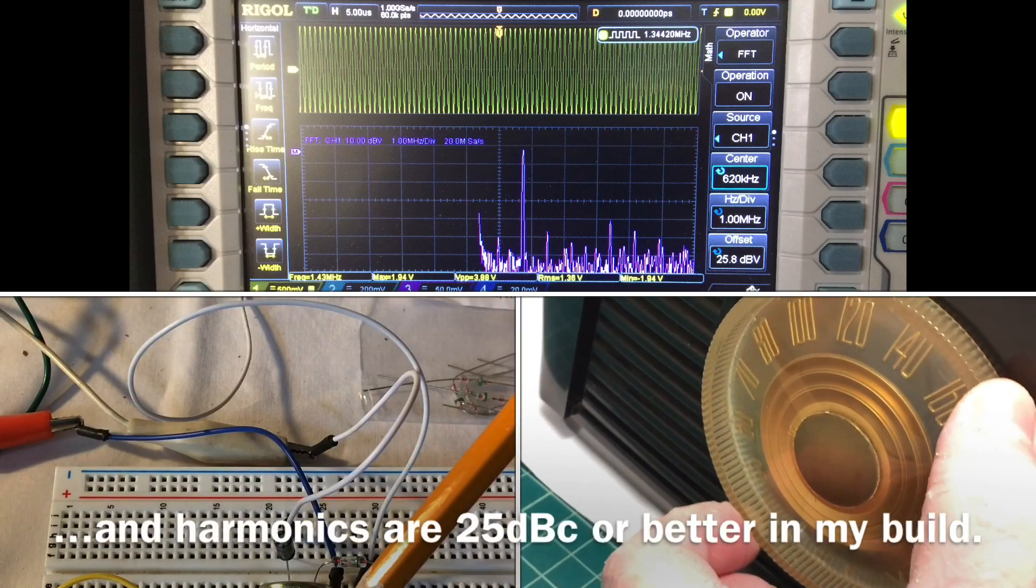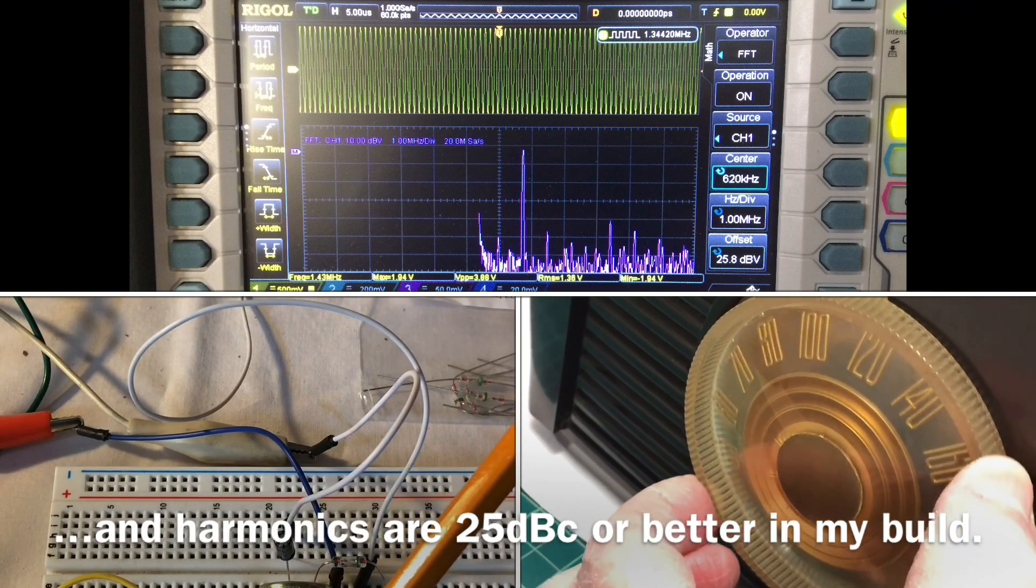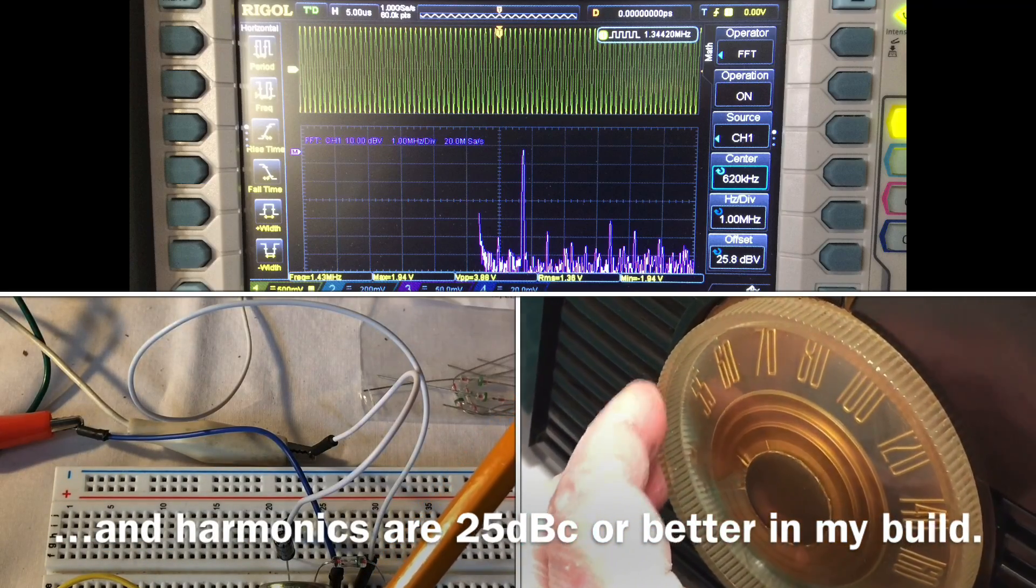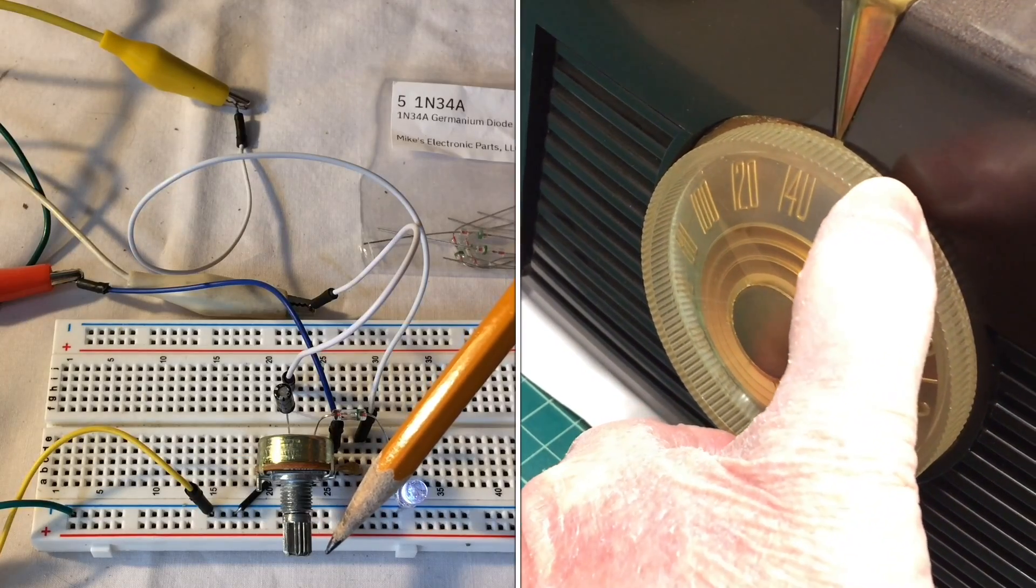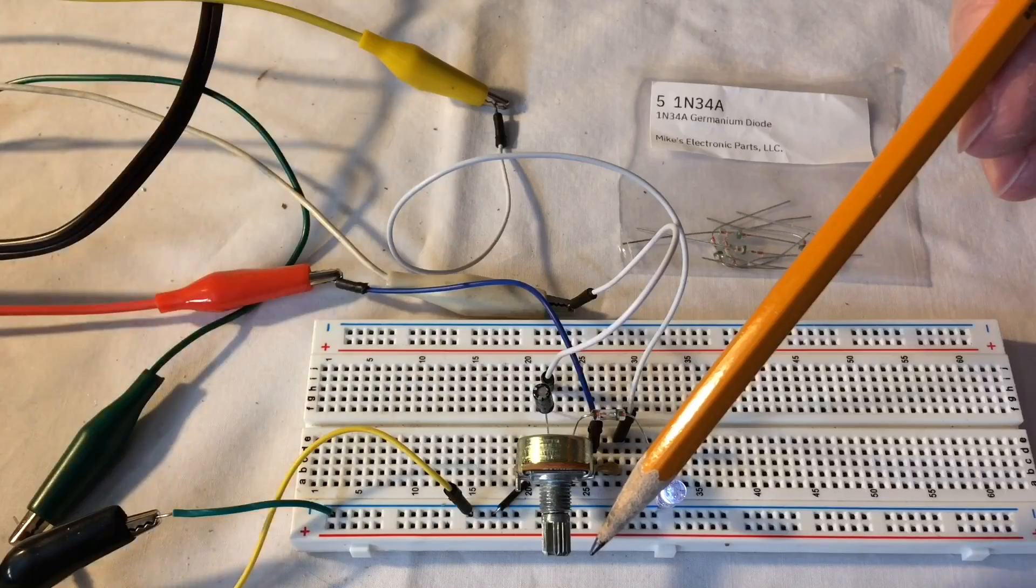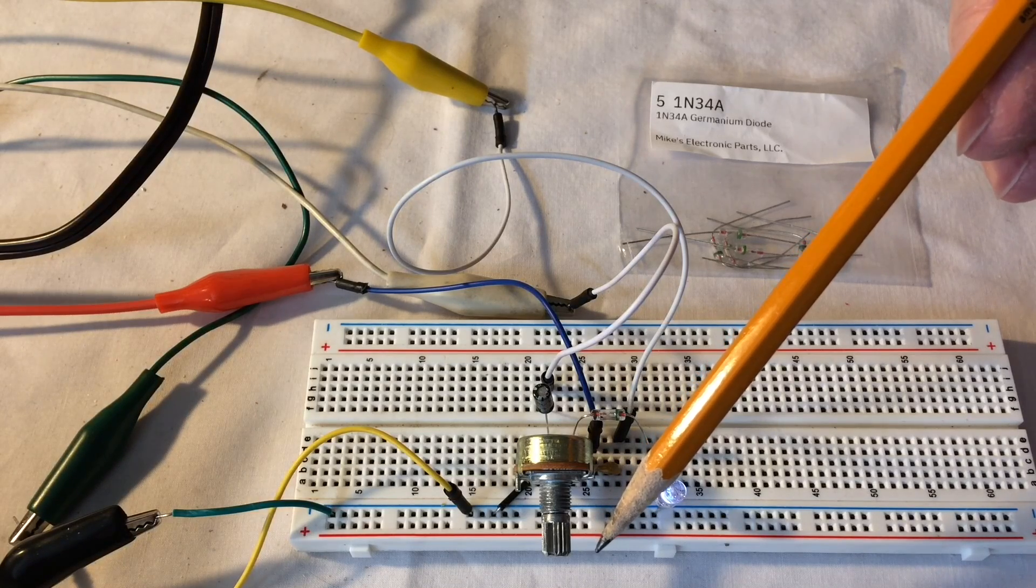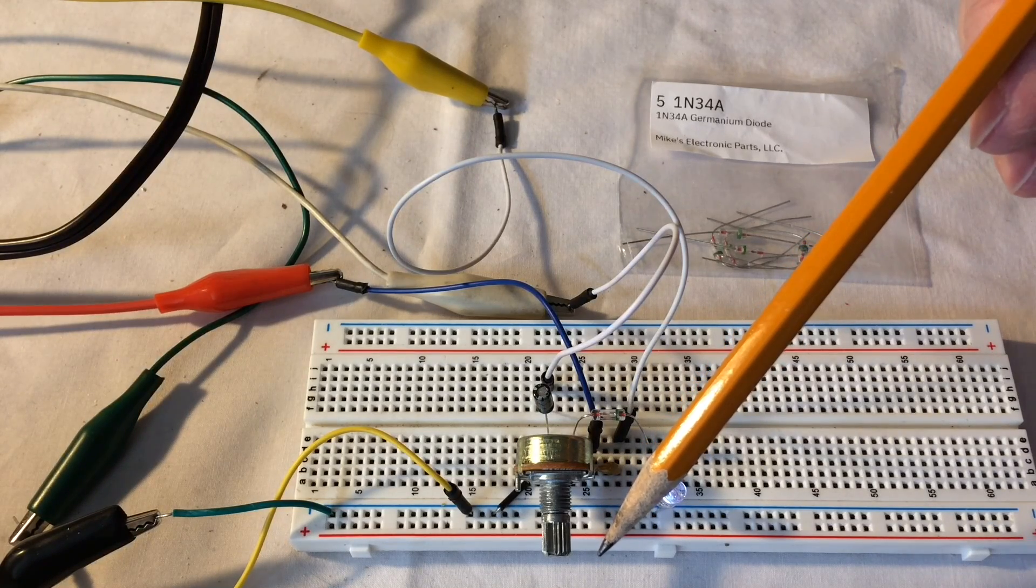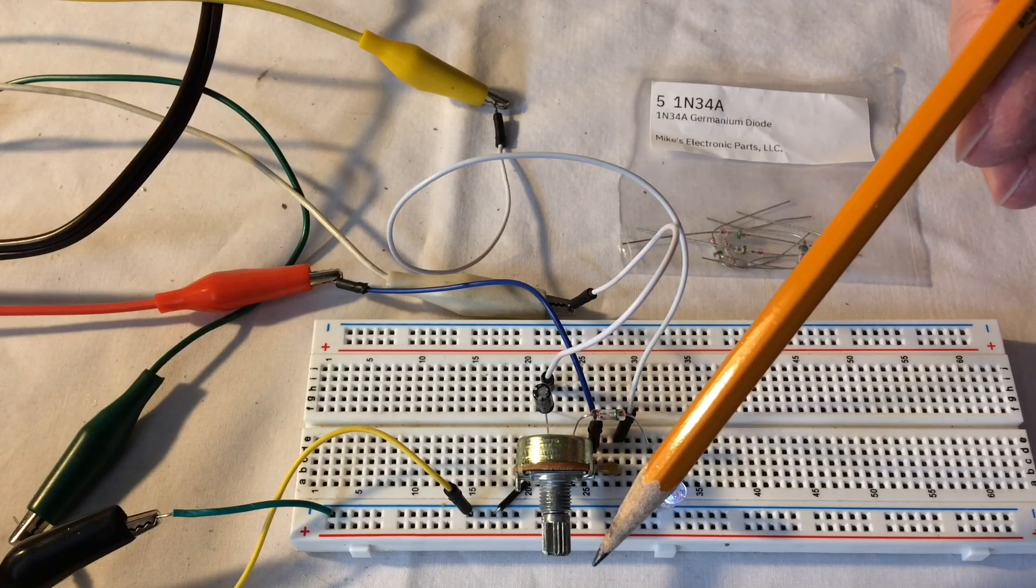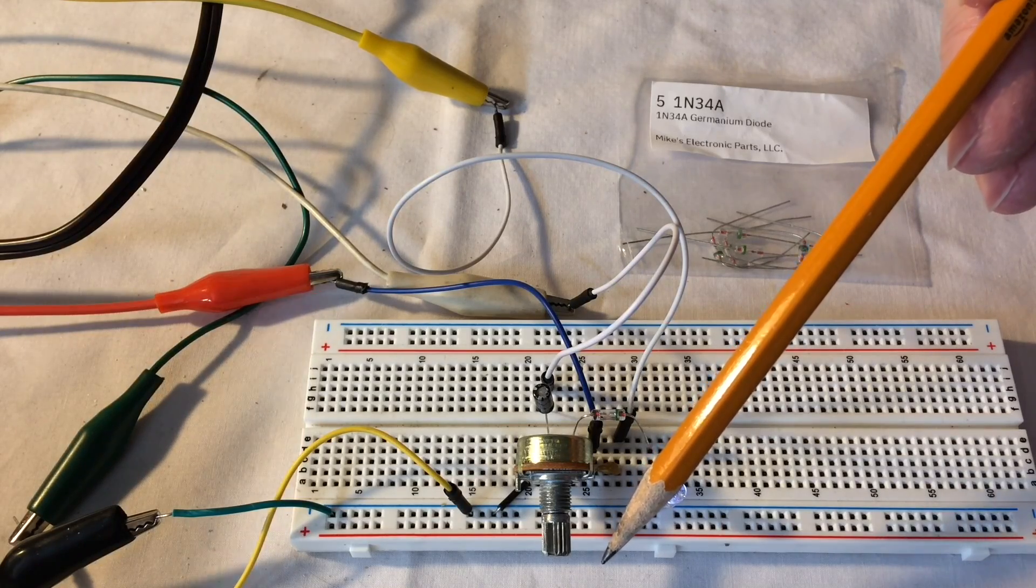To tune the unit itself, you just adjust the tuning condenser or capacitor on the All-American 5 in this case. I tried this on a transformer set and it worked just as well hooking the antenna section up to the antenna coil lead.